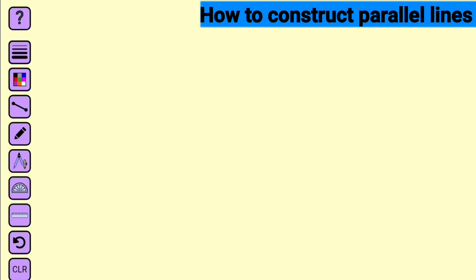In this tutorial, I am going to present to you three different ways to construct parallel lines. Two or more lines are said to be parallel if and only if, no matter where they get to, they will never meet.